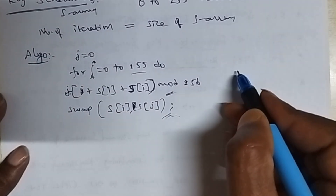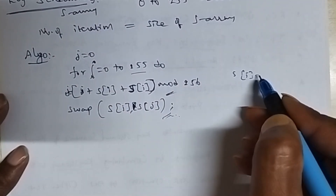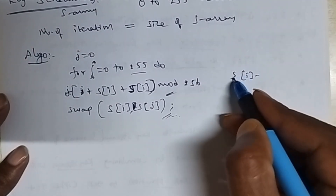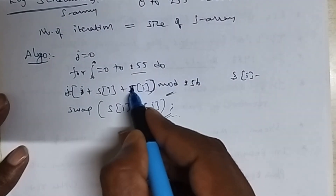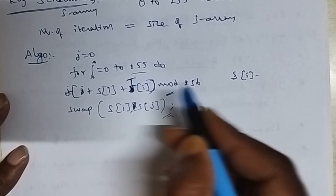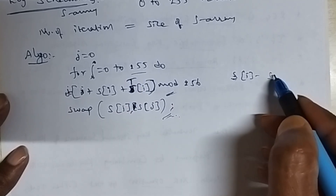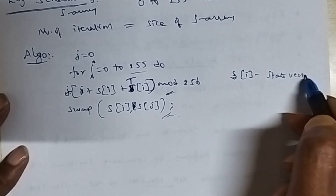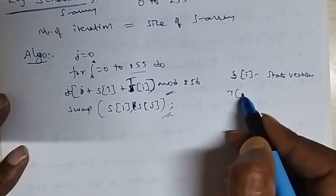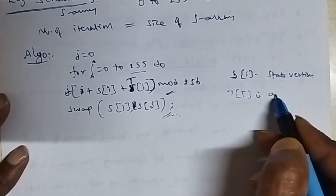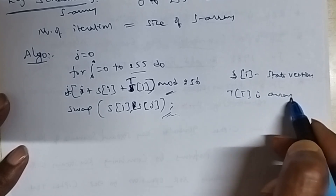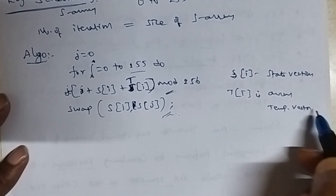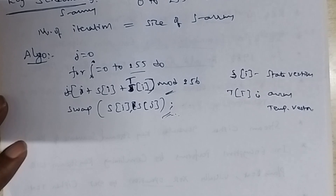Here S[i] is the state vector, and T[i] is the temporary vector array. This is about the key scheduling. Next we will see key stream generation.